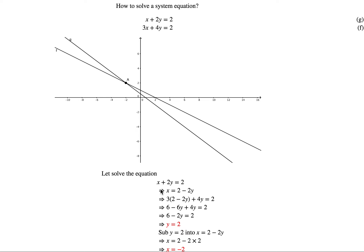Let's use algebra to solve the equation. We take the first equation, x plus 2y equal to 2, and move 2y to the right-hand side, giving us minus 2y. So we have x equal to 2 minus 2y. This is what we derive from the first equation.